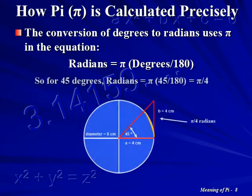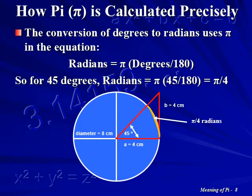The conversion of degrees to radians uses Pi in the equation where radians are equal to Pi multiplied by the value of degrees divided by 180. So for 45 degrees, radians will be equal to Pi times 45 divided by 180. Thus the number of radians will be equal to Pi divided by 4.